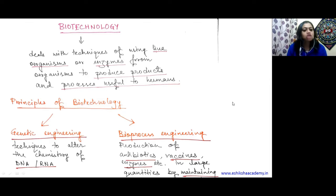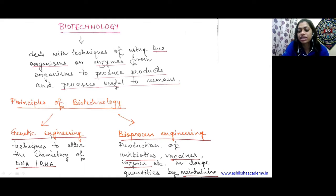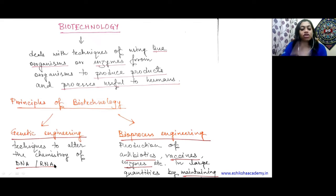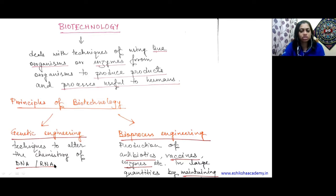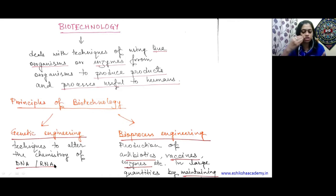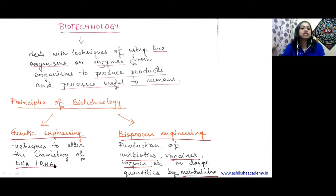In genetic engineering, there are techniques to alter the chemistry of DNA or RNA. DNA and RNA are both related to the expression of a particular gene. That's why I first told you that we need a basic understanding of what is chromosome, what is DNA, and what is a gene.